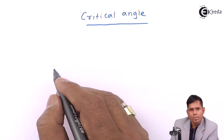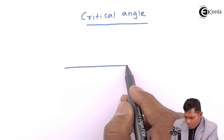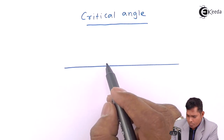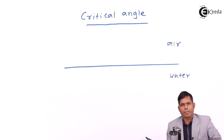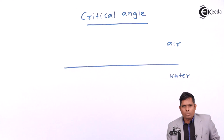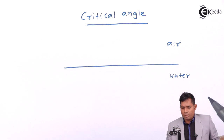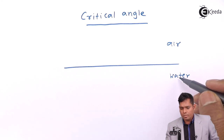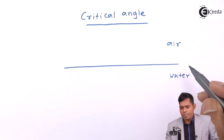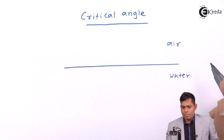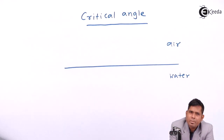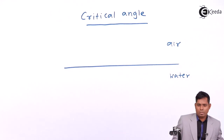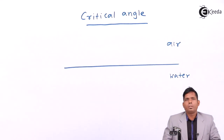Let us understand with the help of a diagram what the critical angle is. This is a surface which separates two media — suppose above it is air and below it is water. Now water is denser and air is rarer. This is true only for light; for sound waves it will be different. For light, water is denser compared to air. The density here basically depends on the speed with which the wave travels in the medium. If a wave travels in a medium at higher speed compared to another medium, then that medium is considered the rarer medium.